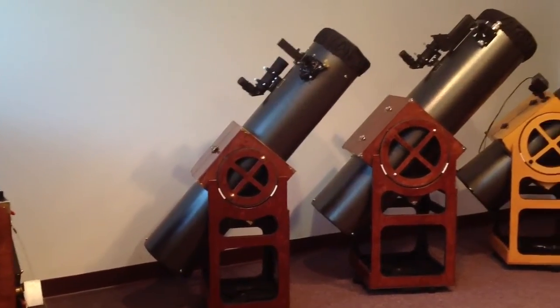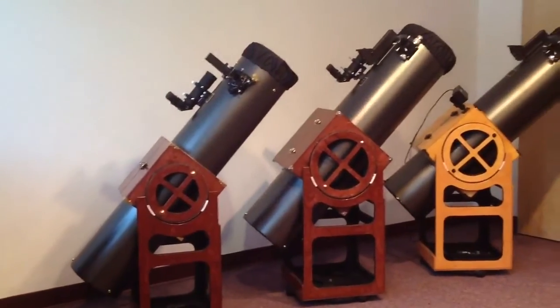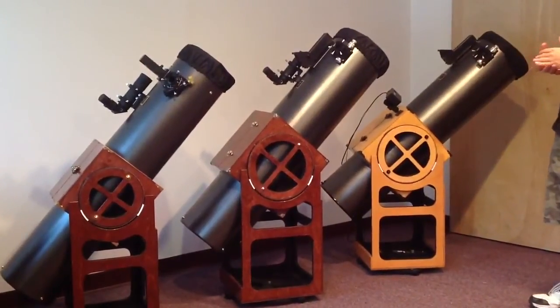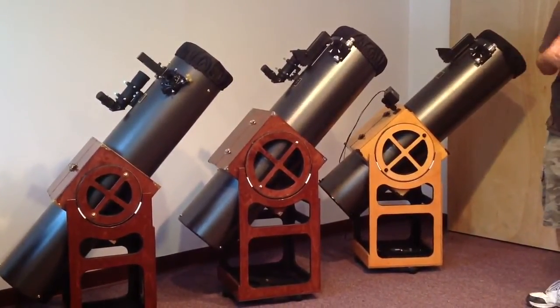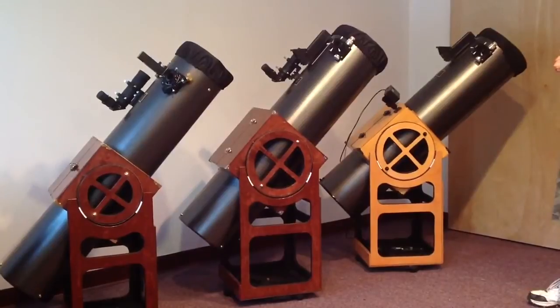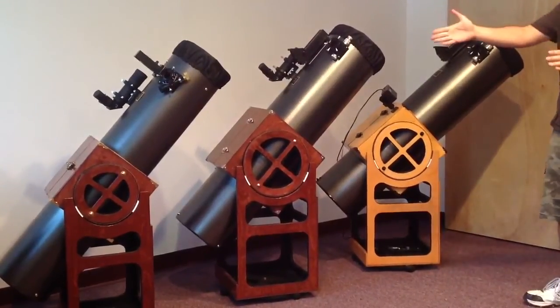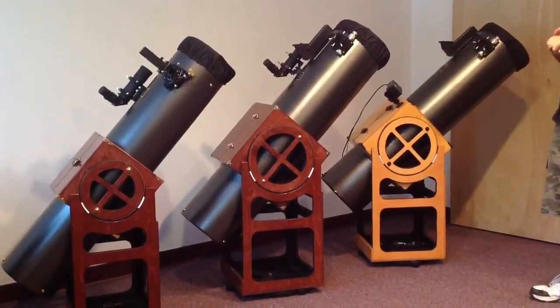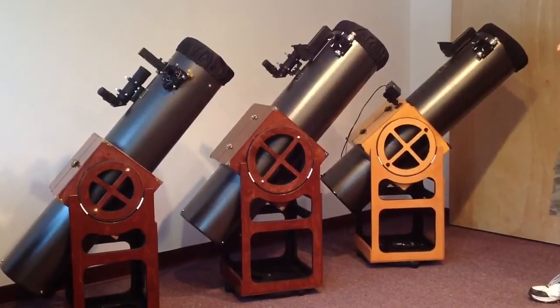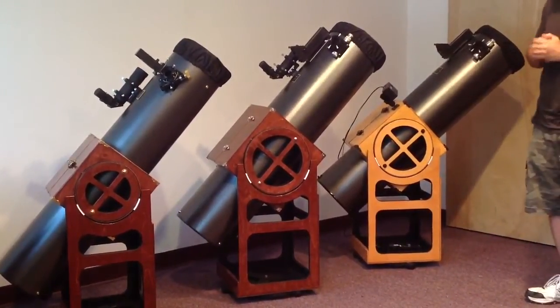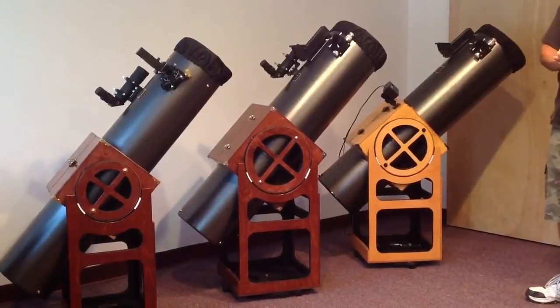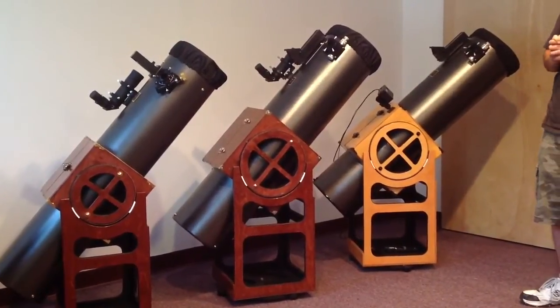We also have a 10-inch next to it here, also in cherry, but with our nickel plated or silver hardware package with the corner protectors and nuts and bolts. That one features a Moonlight dual speed focuser, Telrad, and another Stellarview finder.